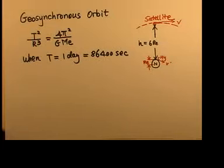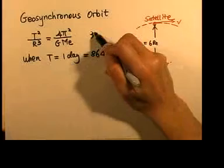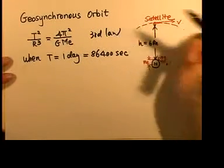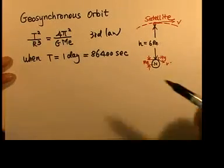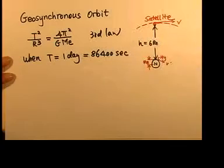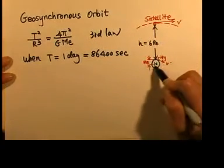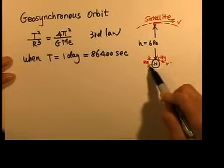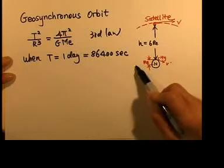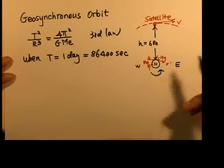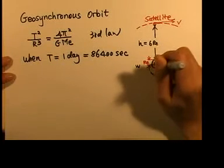Now let's use Kepler's third law to calculate something. There is a so-called geosynchronous orbit. Imagine this is a top view from the North Pole — Earth rotates from west to east, and this is the North Pole.